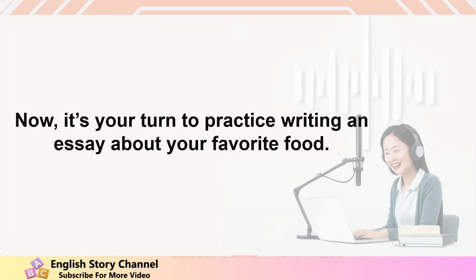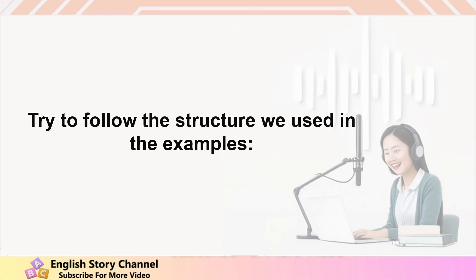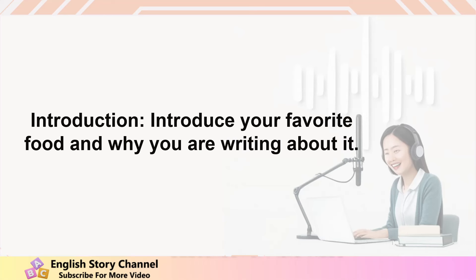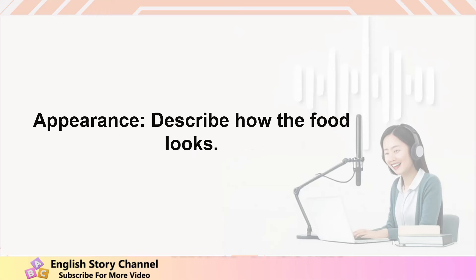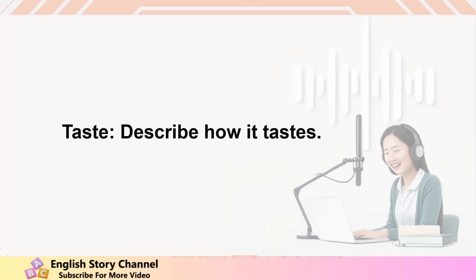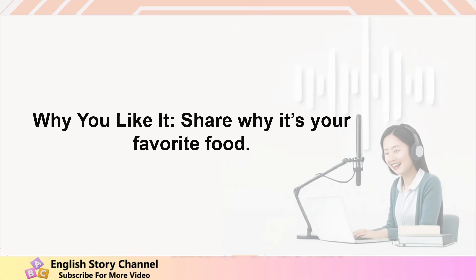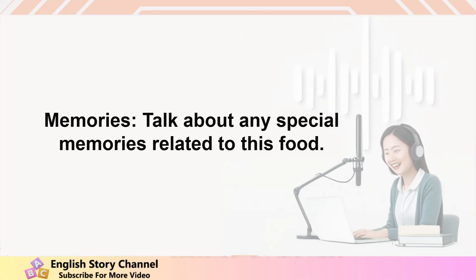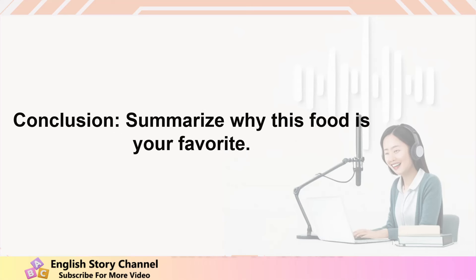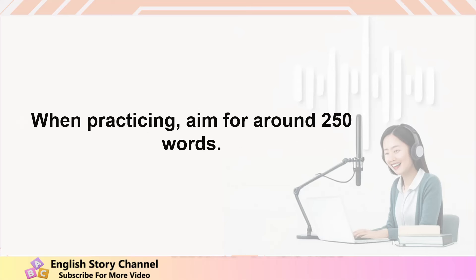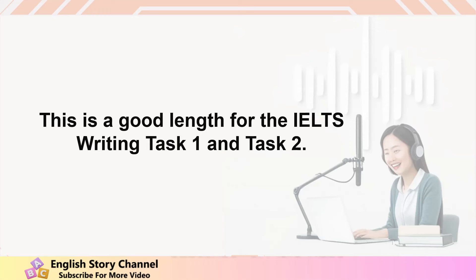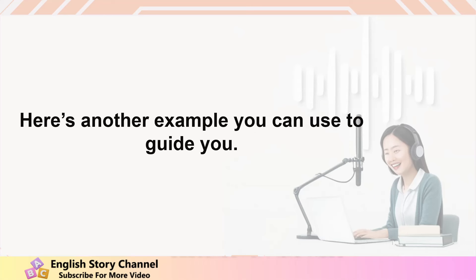Practice writing your essay. Now it's your turn to practice writing an essay about your favorite food. Try to follow the structure used in the examples: Introduction — introduce your favorite food and why you are writing about it. Appearance — describe how the food looks. Taste — describe how it tastes. How it is made — explain the basic steps. Why you like it — share why it's your favorite. Memories — talk about any special memories. Conclusion — summarize why this food is your favorite. When practicing, aim for around 250 words, which is a good length for IELTS writing task 1 and task 2.